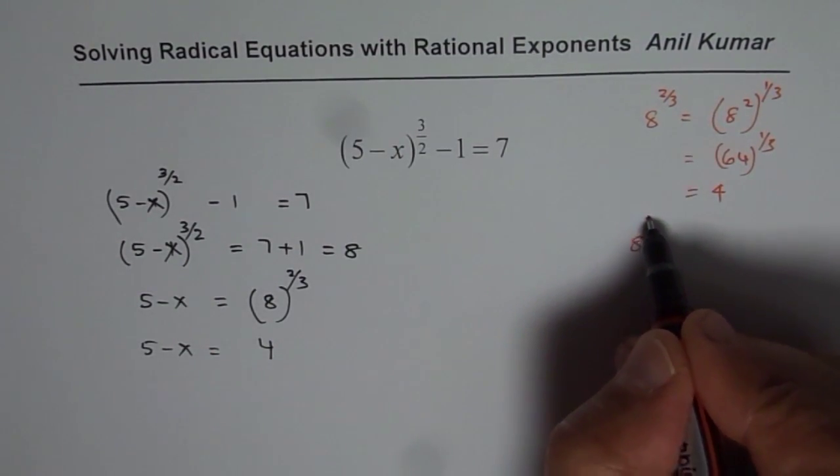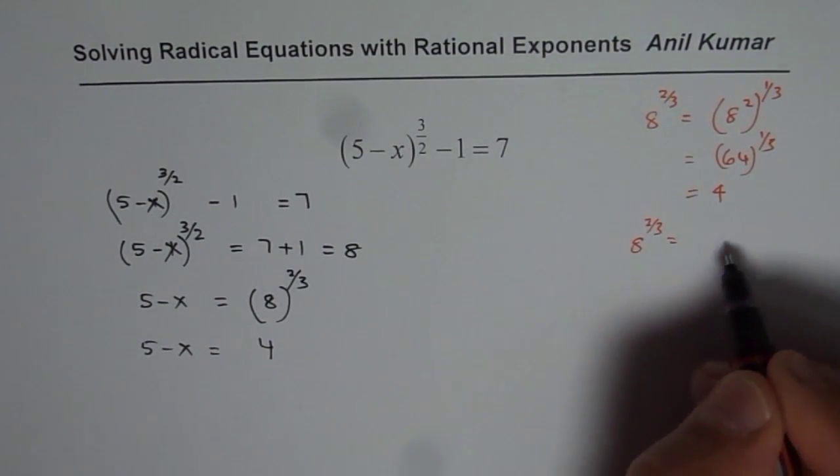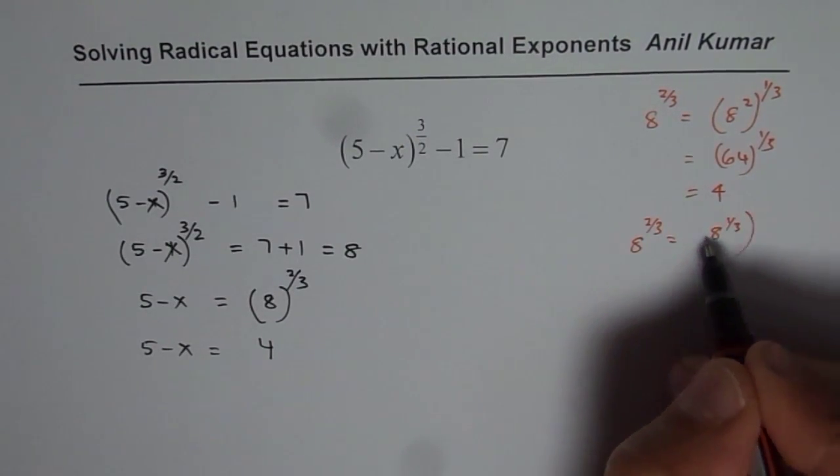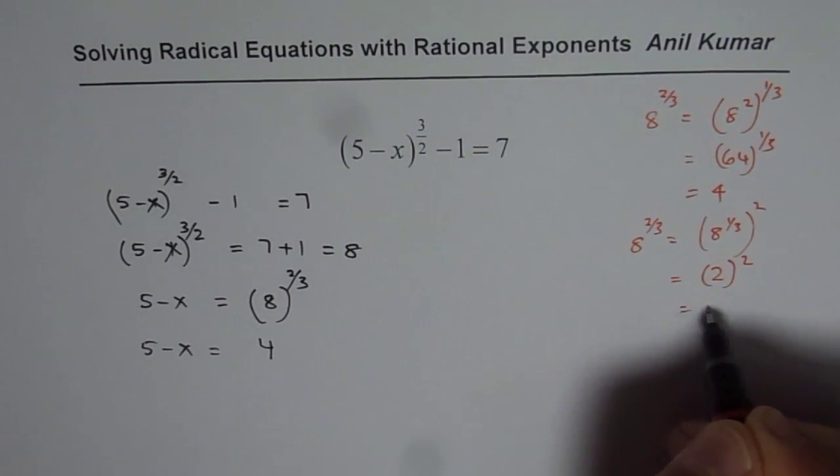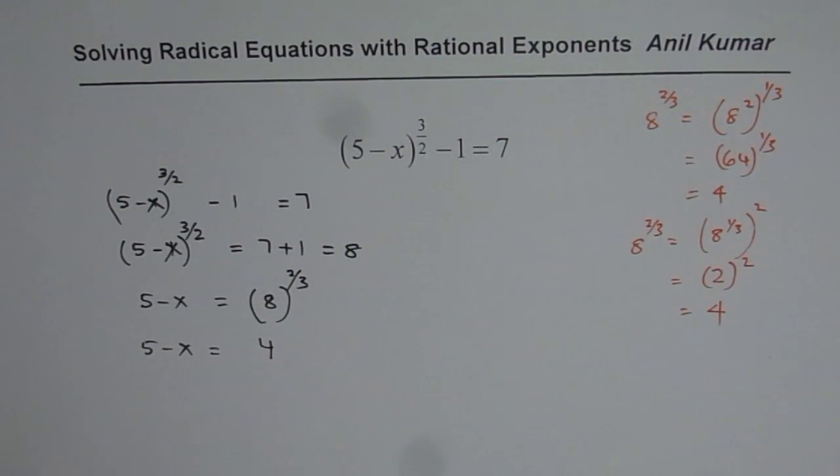Or you could do first cube root and then square. Cube root of 8 is 2, and 2 squared is 4. So either way, you get the same answer. So you get 5 minus x equals 4 and now you can solve for x.